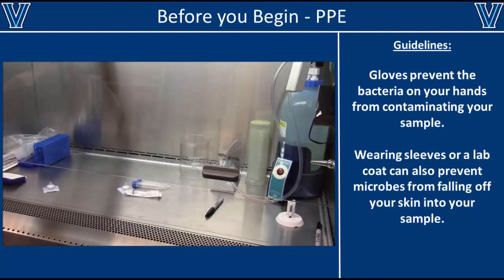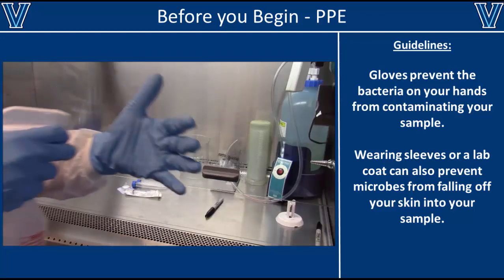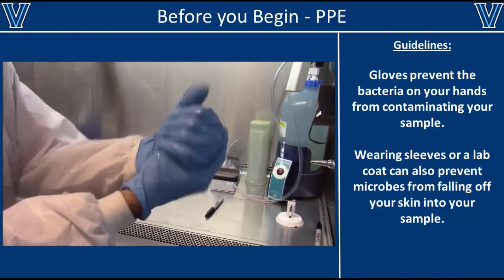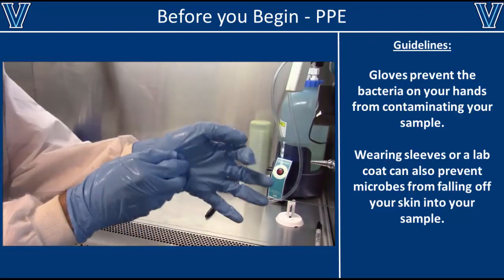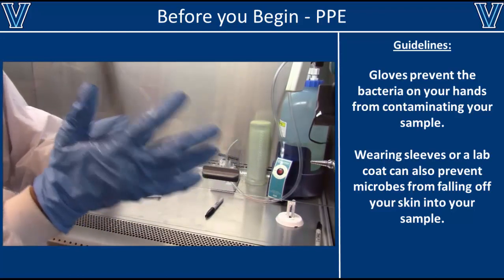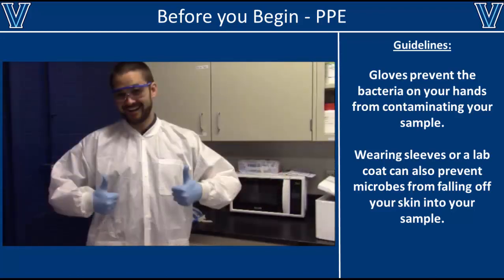In addition to identifying and eliminating existing contaminants, you can prevent future contamination by wearing proper PPE. Gloves should be worn at all times in the lab — not only to protect you from harmful substances, but also to protect your samples from bacteria and fungi on your hands. Once you have your gloves on, spray them with 75% ethanol to sterilize them. Rub the ethanol into all spaces including between the fingers, backs of the hands, and palms, and continue rubbing until the ethanol dries completely.